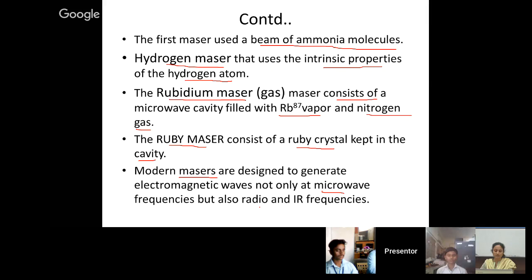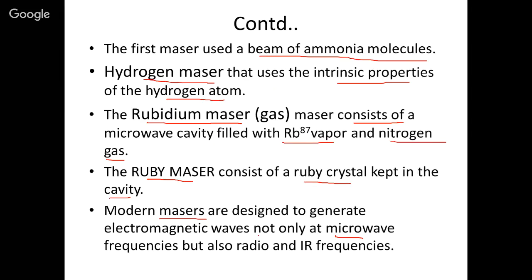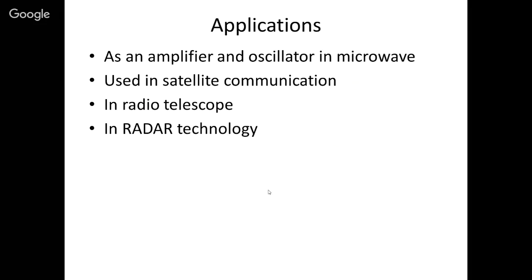Modern MASERs are designed not only to generate electromagnetic waves at microwave frequency but can also generate radiation at radio and infrared frequencies. Applications of MASER include use as an amplifier and oscillator for signals at microwave frequency, used in satellite communication, radio telescopes, and radar — similar applications as laser but generating electromagnetic radiation in the microwave range.